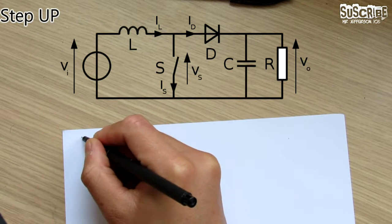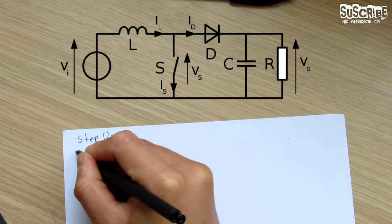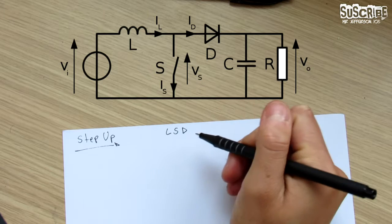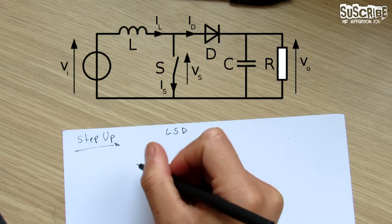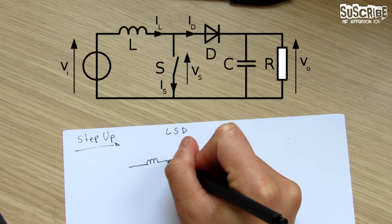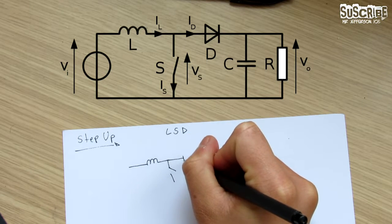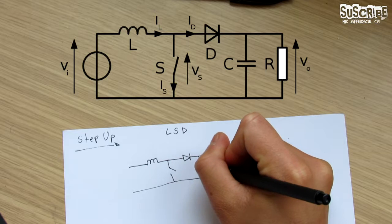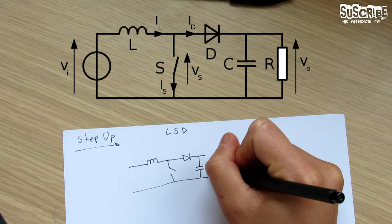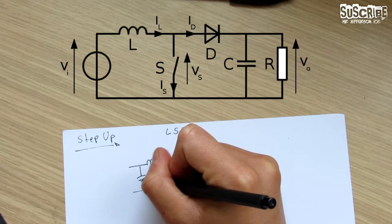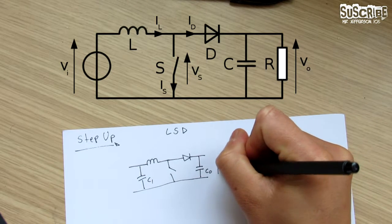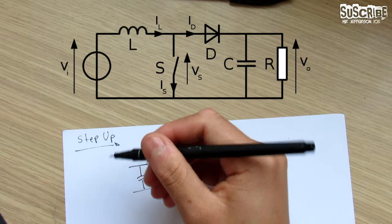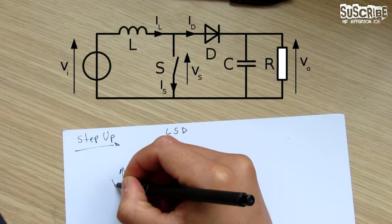The way I remember the step up is by saying LSD — so we have the inductor, the switch, and the diode. The circuit diagram goes like this: you'll have the inductor, the switch, and the diode. We also know that after the diode we have a capacitor — C_in — which is the one that gets charged. We have a voltage out, which is what we need for the specific conversion, and we have V_in as well.